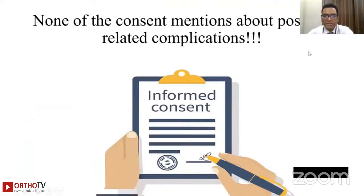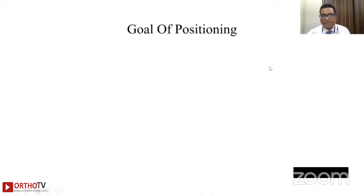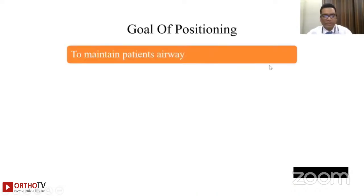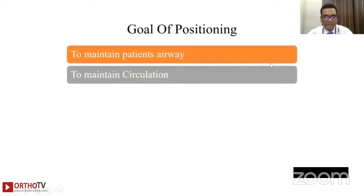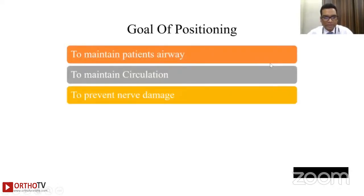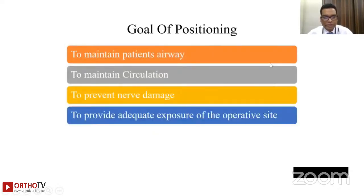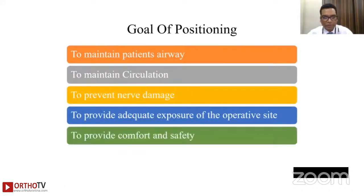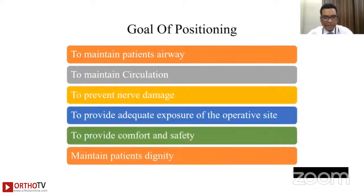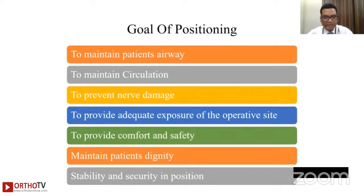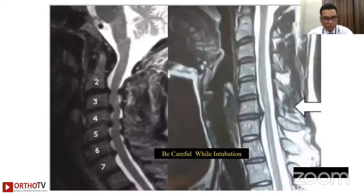A flaw in the current system is that there is no mention of position-related complications in any of our informed consents. The main goals of positioning are: to maintain the patient's airway, to maintain circulation, to prevent nerve damage, to provide adequate exposure of the operative field, to provide comfort and safety, to maintain the patient's dignity, stability, and security in position.